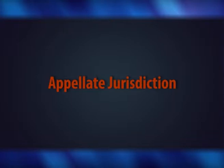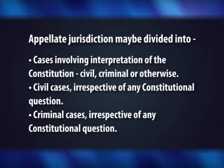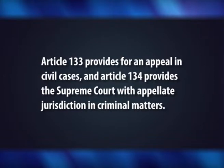The third category is the appellate jurisdiction. The Supreme Court is the highest court of appeal from all courts. Its appellate jurisdiction may be divided into cases involving interpretation of the Constitution, civil cases irrespective of any constitutional question, and criminal matters. Article 132 provides for an appeal to the Supreme Court by High Court certification. Article 133 provides for an appeal in civil cases and Article 134 provides the Supreme Court with appellate jurisdiction in criminal matters. However, the Supreme Court has a special appellate jurisdiction to grant, in its discretion, special leave to appeal from any judgment, decree, sentence or order in any case or matter passed or made by any court or tribunal.